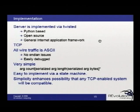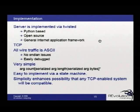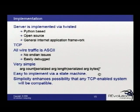It's implemented in Python via Twisted and it is open source — you can find Network Spaces on SourceForge. It uses a general internet framework via TCP. One consideration is that all the wire traffic is ASCII, which eliminates endian issues and makes the system easy to debug, but it doesn't provide security — and that is something on our radar. It does make things very simple: we have a very simple syntax that's easy to implement, and because it's simple, we can use any TCP-based or enabled system to communicate.